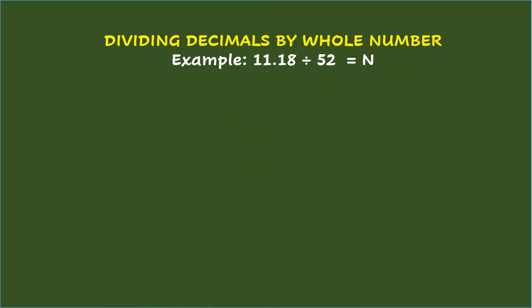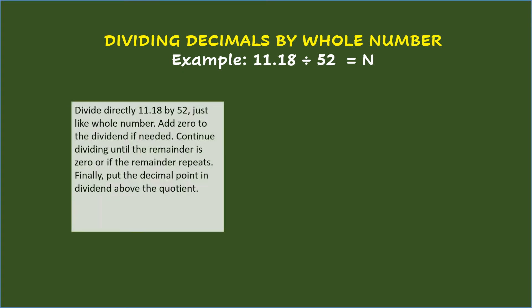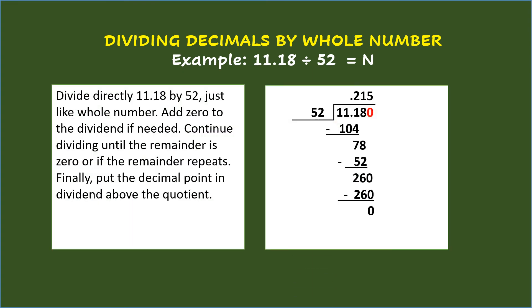Dividing decimals by whole number. Example: 11.18 divided by 52 equals n. With this, divide 11.18 by 52 directly since the divisor 52 is already a whole number. Add zero to the dividend if needed. Continue dividing until the remainder is zero or the remainder repeats. Finally, put the decimal point in the dividend above the quotient. Doing all these steps, 11.18 divided by 52 equals 0.215.